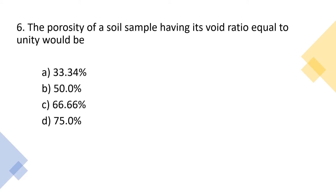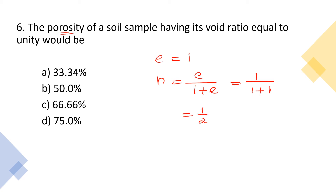Sixth question: find the porosity of a soil sample with void ratio equal to unity, i.e., e = 1. Using n = e / (1 + e): n = 1 / (1 + 1) = 1/2 = 0.5, which equals 50%. The answer is option B. You just need to know the equation n = e / (1 + e).